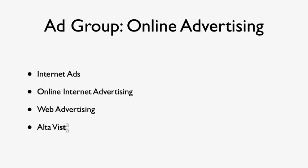These are our keywords: Internet ads, online internet advertising, web advertising, and AltaVista advertising — for those who are looking to advertise to people who are in the early 90s. Any of these keywords we'd love to show up for, and we'd be happy to have any of them in our headline. This will prevent us from having to do four different ad groups.